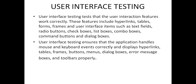The next part is user interface testing. User interface testing is used to test whether the user interaction features work correctly. These features include hyperlinks, tables, forms, frames, user interface elements such as text fields, radio buttons, checkboxes, list boxes, combo boxes, command buttons and dialog boxes. User interface testing is used to check the forms created and published on a web-based application.